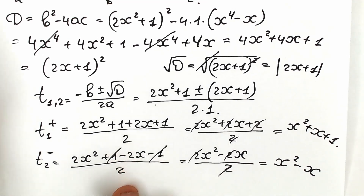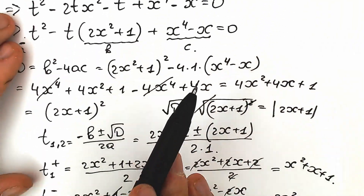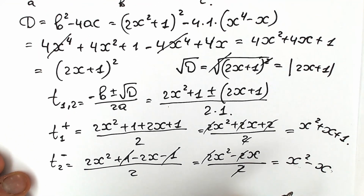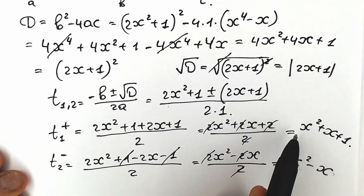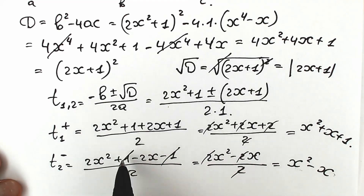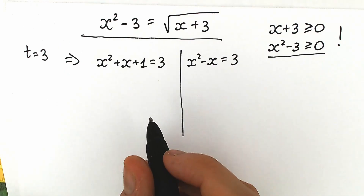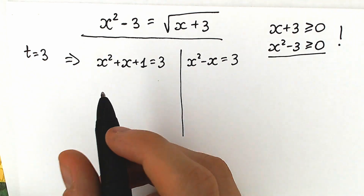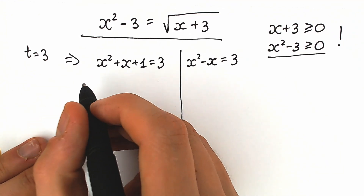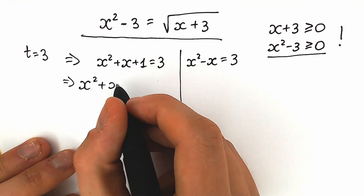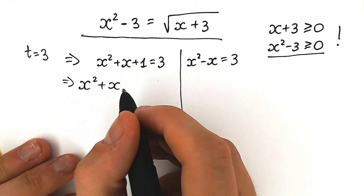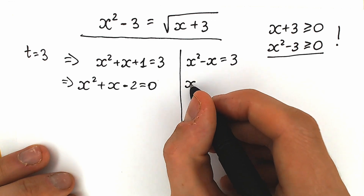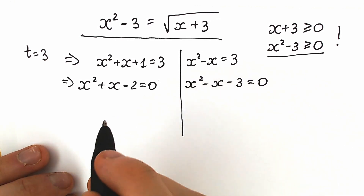In the beginning we had the substitution t equal to 3, so we have two cases. Setting t₁ equal to 3: x squared plus x plus 1 equals 3, so x squared plus x minus 2 equals 0. Setting t₂ equal to 3: x squared minus x equals 3, so x squared minus x minus 3 equals 0.